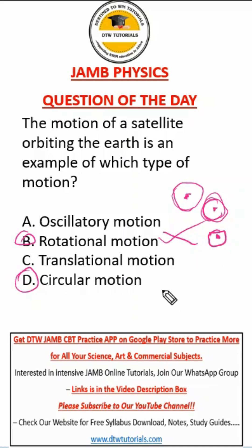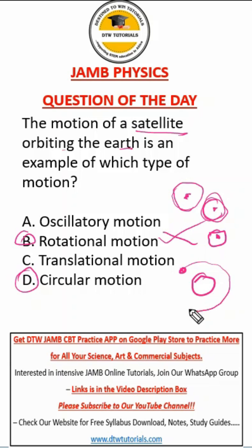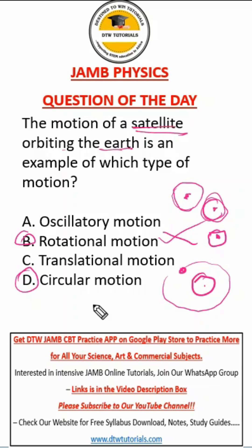Now, what is circular motion? Circular motion is when the body is outside. In this case, the question says a satellite orbiting the Earth. So this is the satellite, and this is the Earth. It's moving around. You can see two bodies — the body is outside another body, rotating outside another body. That is circular motion.